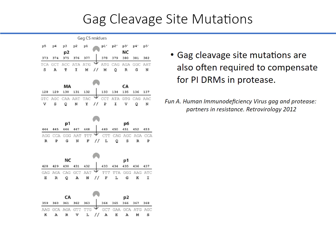One of the explanations for the high genetic barrier to PI resistance is that in addition to the frequent requirement for multiple mutations in protease, drug resistance often also requires additional mutations in GAG, usually at the sites that are recognized and cleaved by the protease enzyme. The precise number of such mutations and their exact locations are not known with certainty.